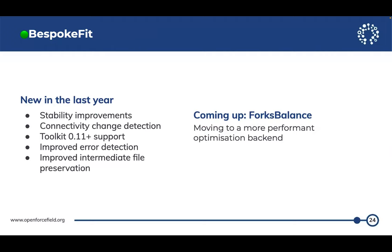BespokeFit as a product has seen a lot of improvements in stability and verbosity over the last year. We can now detect connectivity changes — when we do QM optimizations, protons can wander around, giving awful fits. We don't prevent that, but we do prevent you from getting a horrible force field by safely crashing out when there's a connectivity change. We've also done routine maintenance to follow biopolymer support in the toolkit, and now there's better intermediate file preservation so when something goes wrong, you can see what happened. It's still a complex beast and we're working to make it better.